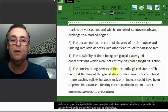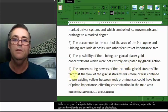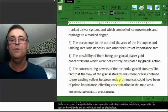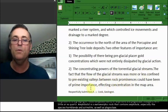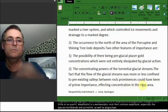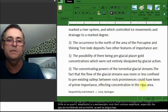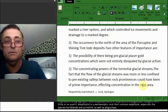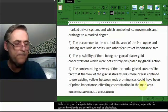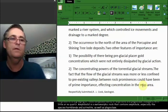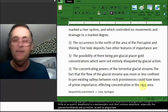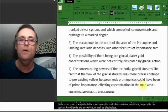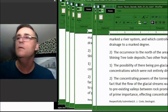Even better than the trails that we get from these glaciers, because there's many layers and it's separated, disseminated differently. The possibility of there being pre-glacial gold concentrations which were not entirely dissipated by glacial action, I believe that. The concentrating powers of the torrential glacial streams, the fact that the flow of the glacial streams was more or less confined to pre-existing valleys between rock prominences, could have been of prime importance affecting concentration in the map area. That could be too. You've got different layers. He's not 100% sure how it happened, but it could be. The glaciers did it, or before the glaciers, the flood. If you don't like the flood, you're anti-biblical. Think of it this way: a flood. Not all floods are global.